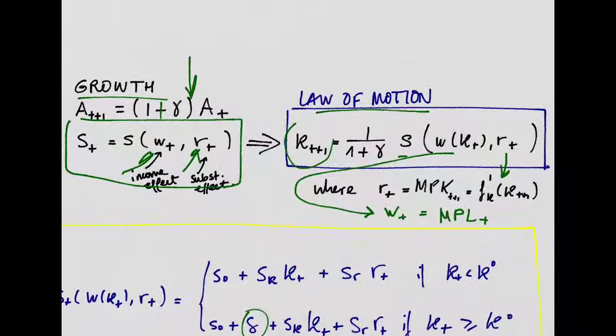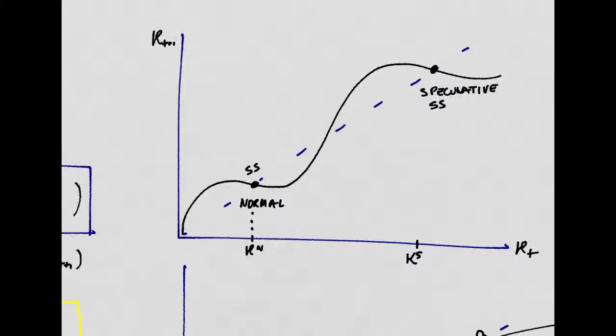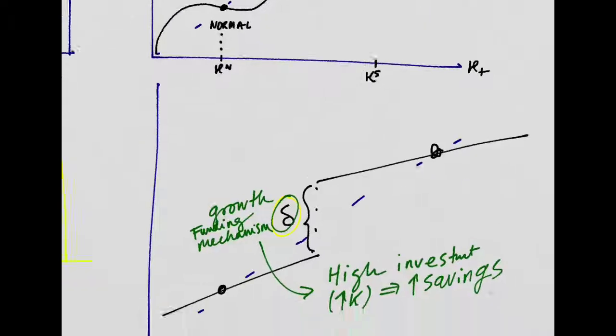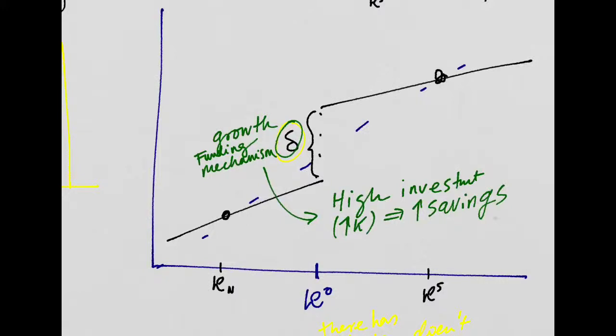They argue that under very general settings, this economy, this law of motion, would look something like this one, with multiple steady states. But they want to make it tractable so that they can work with it easier, and so they linearize it. And this is how it looks like after linearizing it.